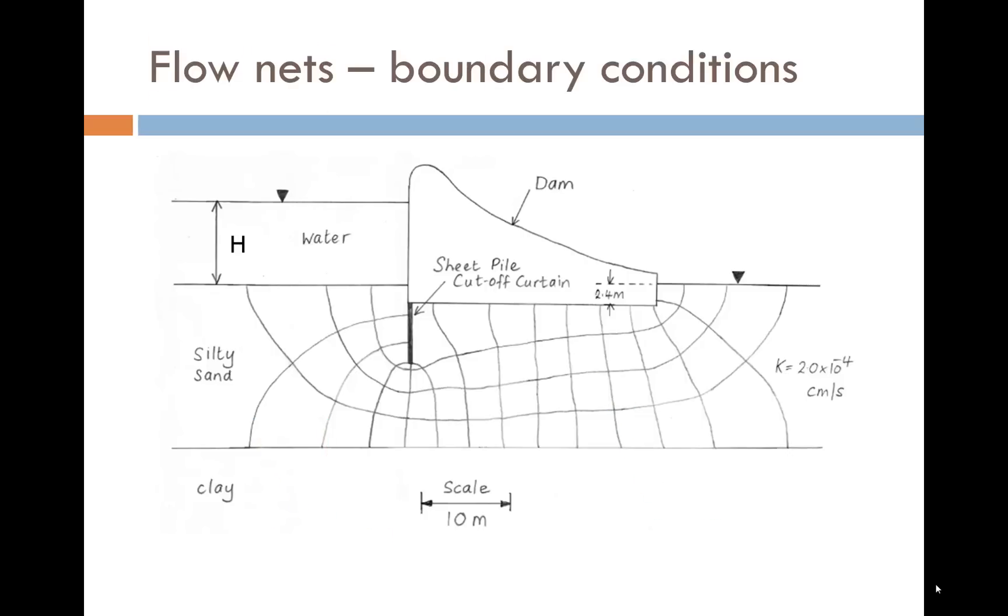One important use of flow nets is to help understand the boundary conditions for a seepage problem, as these will influence flow net construction. In this example, the top soil surfaces on either side of the dam are equipotential lines, lines of constant head. The upstream and downstream sides of the cut-off wall and the underside of the dam are flow lines. The bottom boundary of the silty sand is also a flow line.